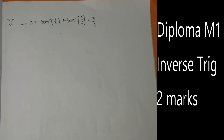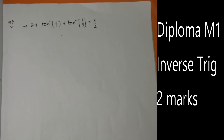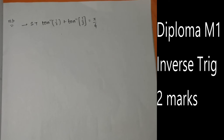We have to show that tan⁻¹(1/2) plus tan⁻¹(1/3) is equal to π/4. This question appeared in the recent diploma M1 exam.